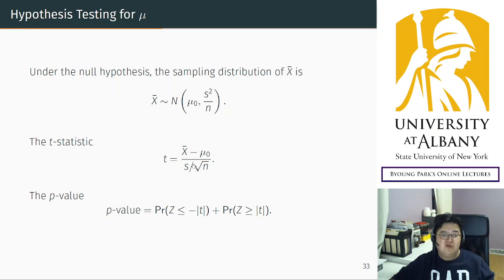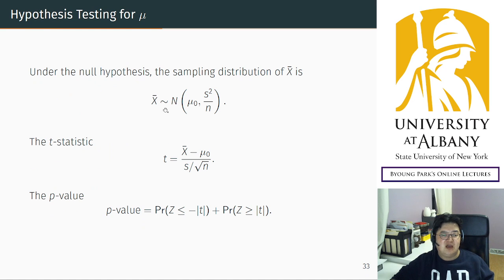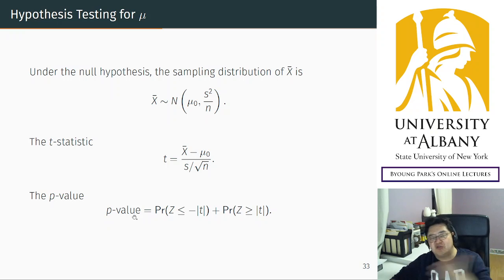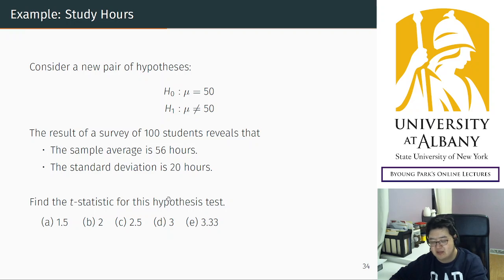Algebraically, what you need is just to calculate the T-statistic and the p-value. The other steps are conceptual and theoretical. Using those results, you calculate these two. At the end, compare the p-value with the significance level — if the p-value is too small, you reject; if the p-value is too large, you do not reject. That is the storyline of how we conduct hypothesis testing. Now let's consider a new pair of hypotheses.